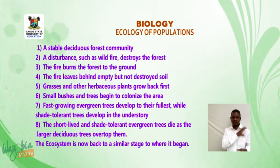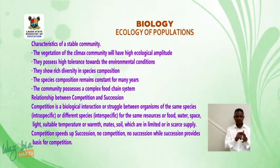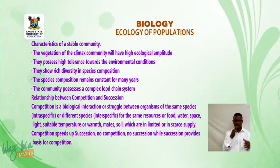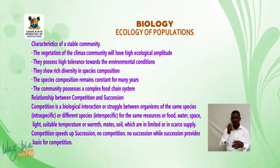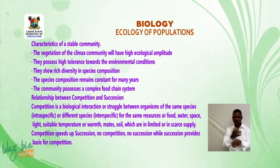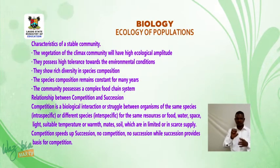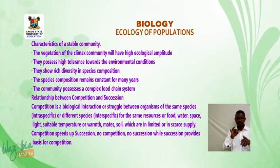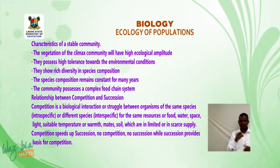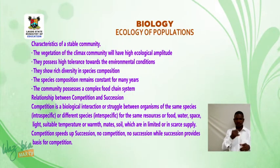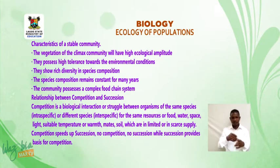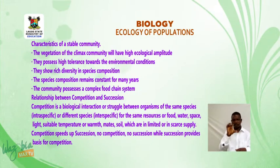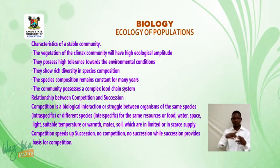Characteristics of a stable community: one — the vegetation of the climax community will have high ecological amplitude; two — they possess high tolerance towards environmental conditions; three — they show rich diversity in species composition; four — the species composition remains constant for many years; five — the community possesses a complex food chain system.